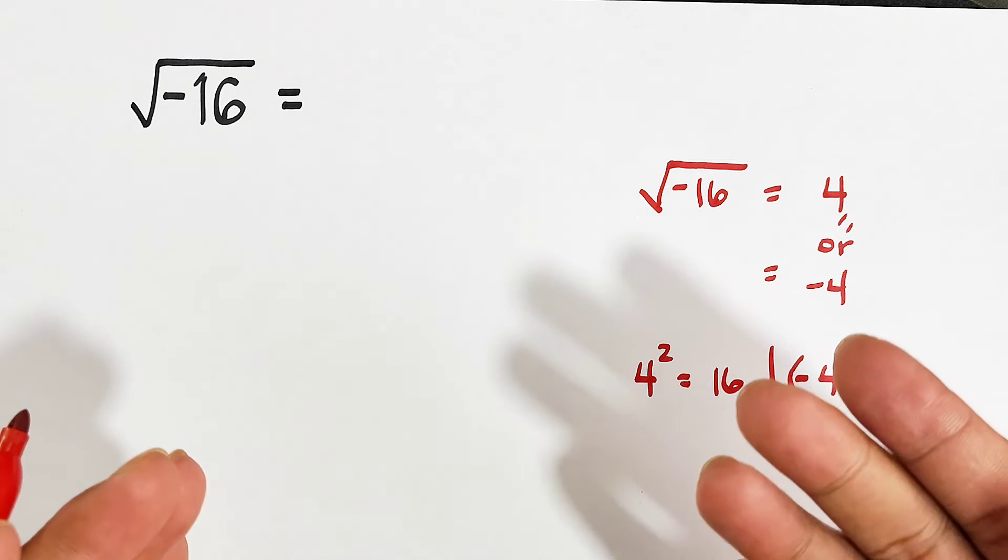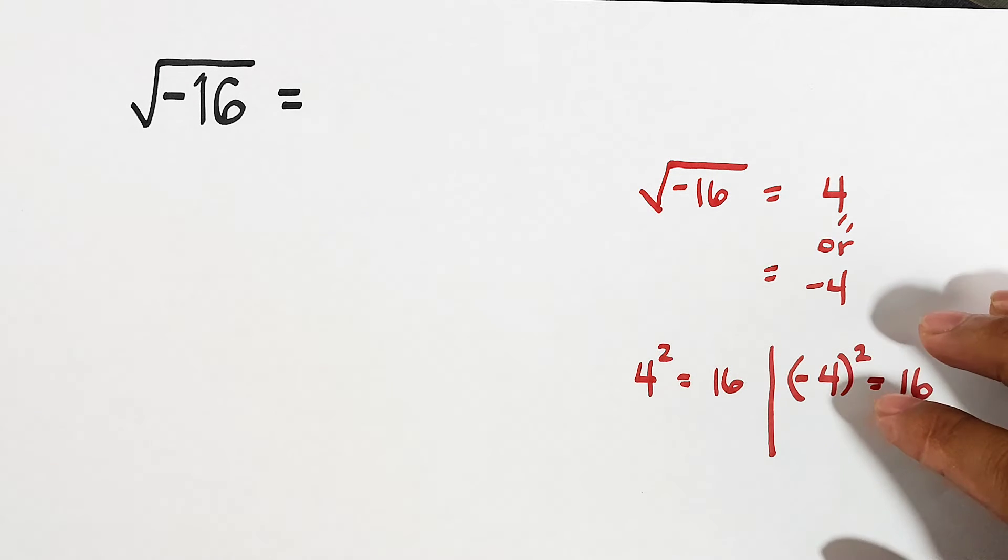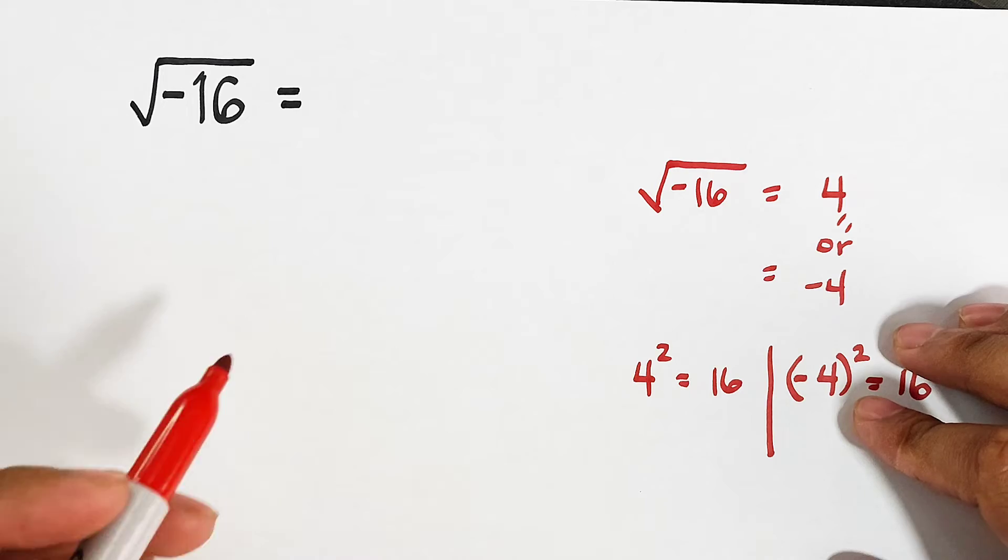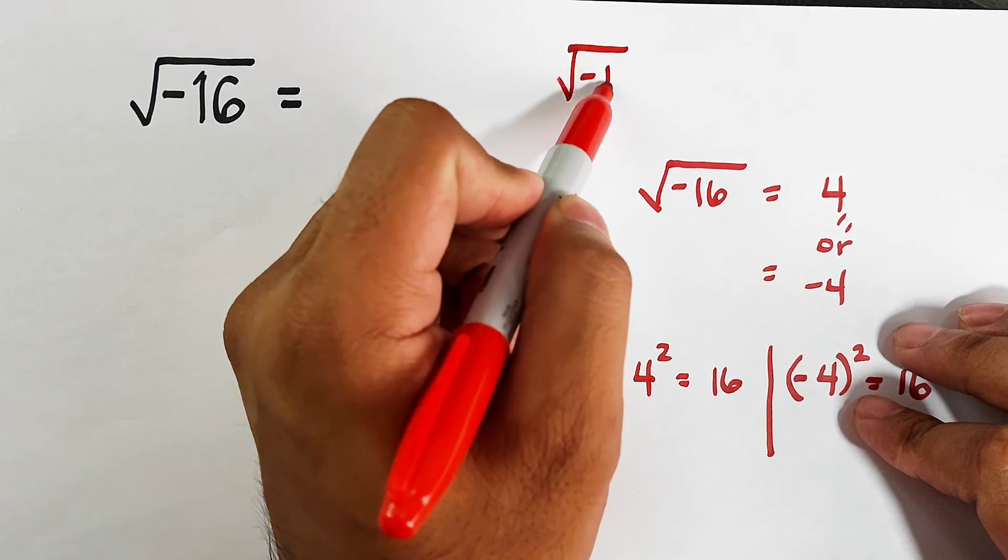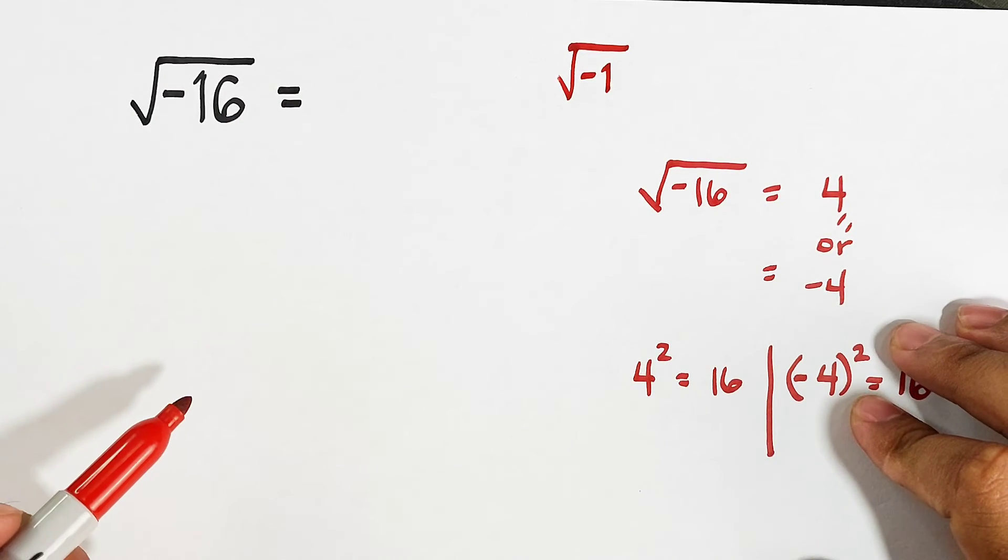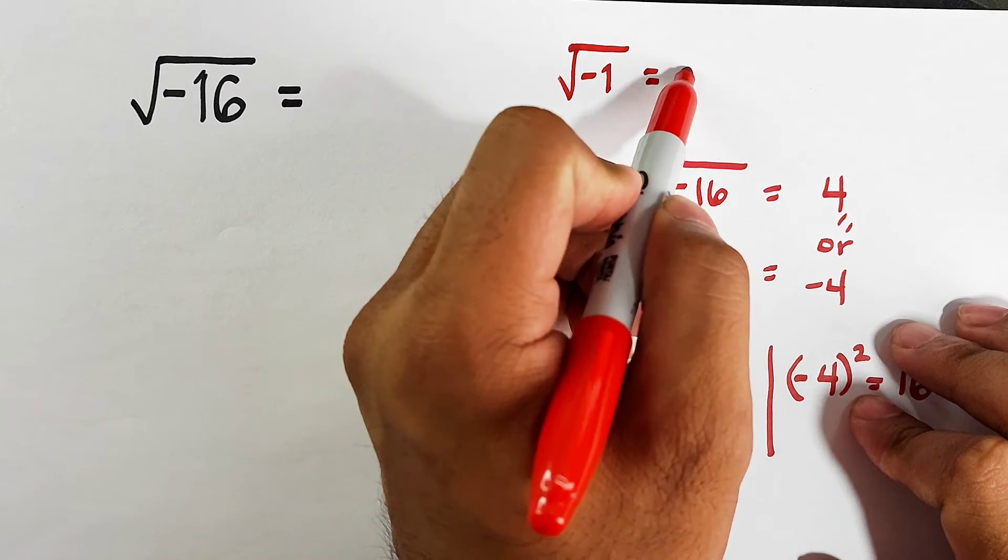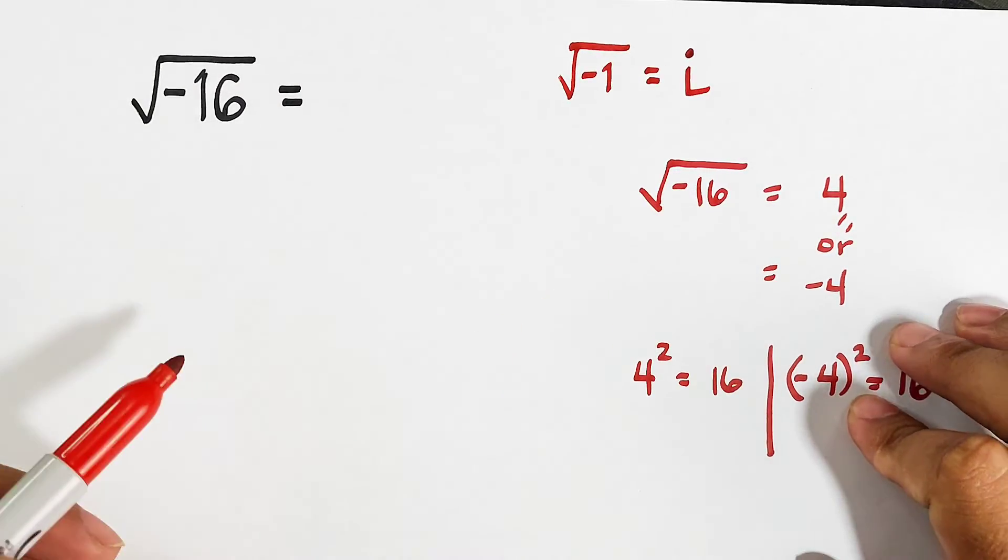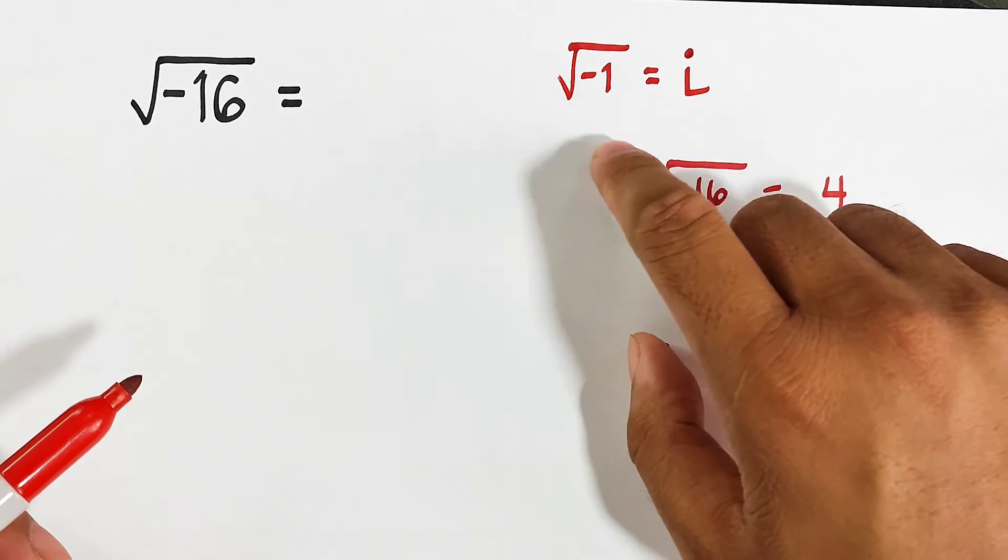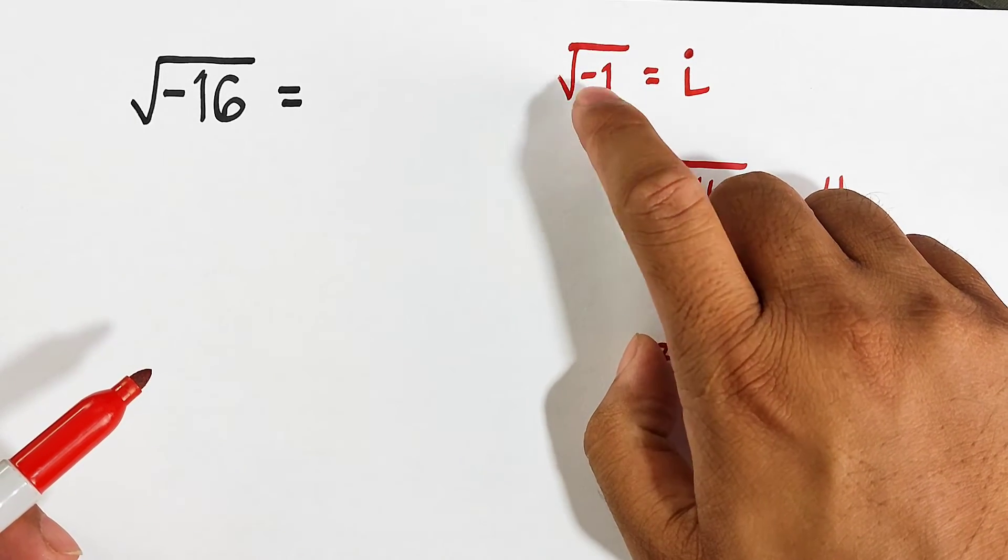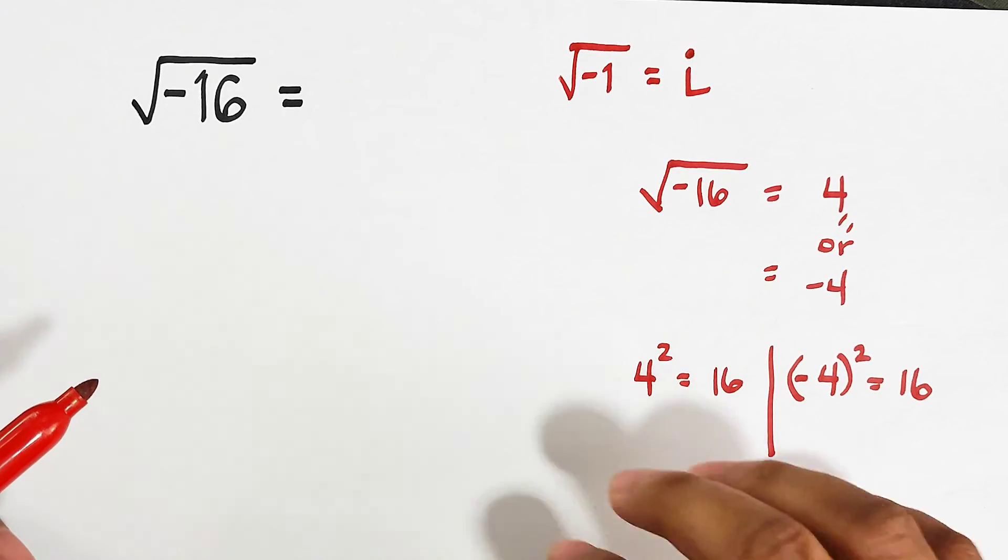I will introduce to you the square root of imaginary numbers. In mathematics, we have square root of negative 1 and in imaginary number, it is simply equal to i. So when you encounter this kind of letter i, it represents the square root of negative 1. So how are we going to apply this concept in this given example?